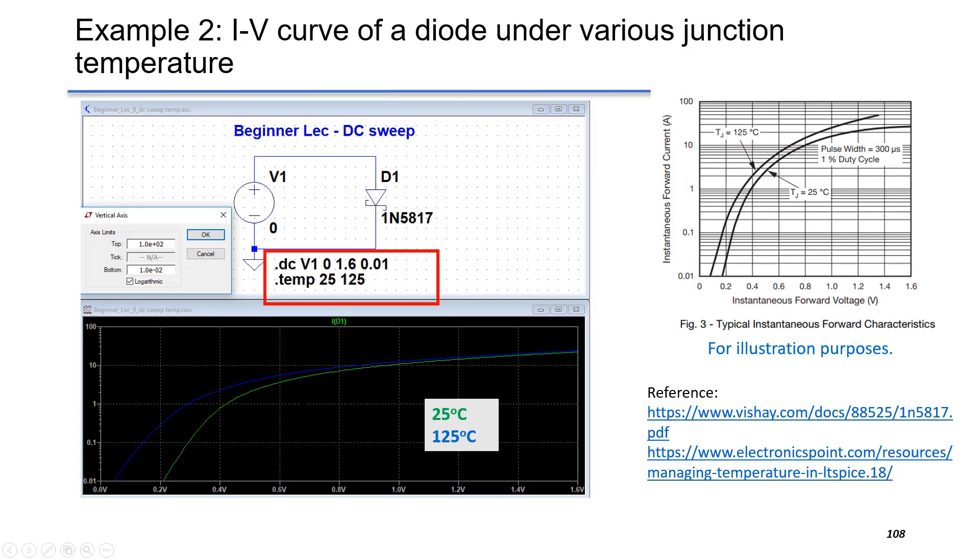Example number 2 gives the IV curve of a diode under various junction temperatures. And you can see this is a new line of defined temperature .temp, 25 and 125. The left figure gives the schematic and the plot.